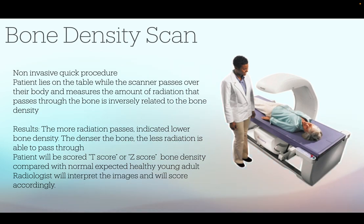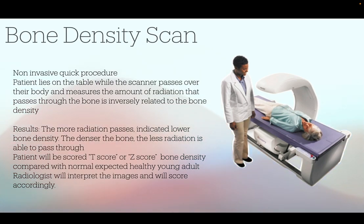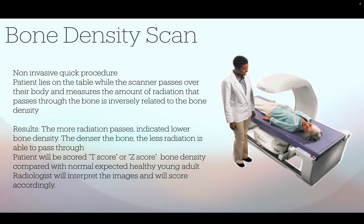During the scan, a large scanning arm will be passing over your body to measure bone density. Here on the right side you can see a picture of the patient laying on the bone densitometry machine with that large arm that moves across. As the scanning arm is moving slowly over your body, a narrow beam of low dose x-rays will be passing through the part of your body being examined.